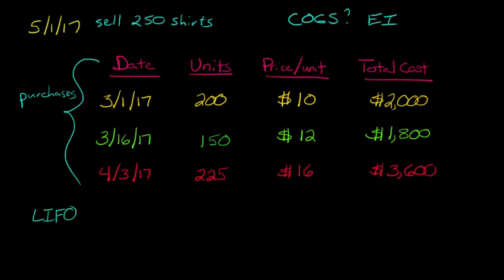And what does that mean? That means for cost of goods sold, the last units in, the most recent purchases, are going to be the ones that go to cost of goods sold. So this 225, those 225 units that we purchased most recently, those are going to go to cost of goods sold. But we sold 250, so we still have another 25.